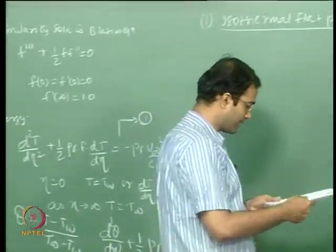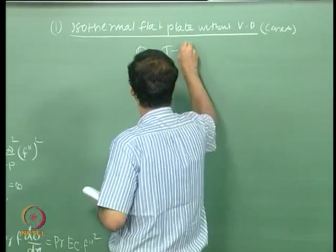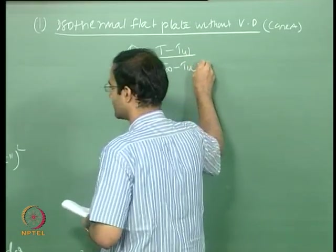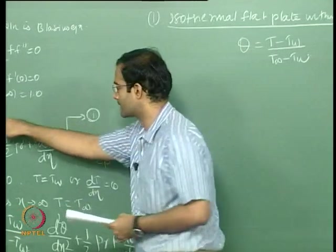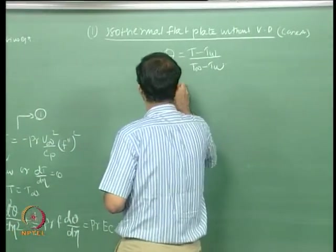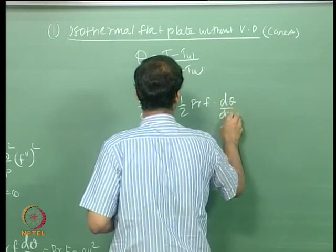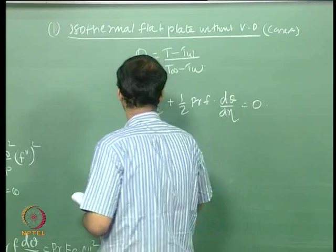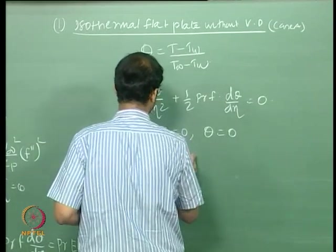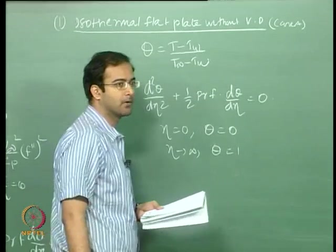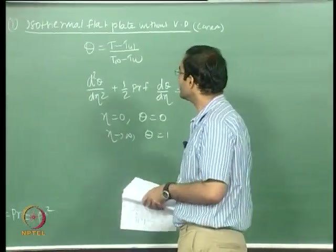The first sub-problem is an isothermal flat plate without viscous dissipation — that is Case A. This is nothing but the Polhausen's similarity solution. You define theta the same way as (T – T_wall)/(T_∞ – T_wall), substitute into the energy equation without the viscous dissipation, and get the Polhausen's equation: d²θ/dη² + (1/2) Pr f dθ/dη = 0, subject to θ(0) = 0 and θ(∞) = 1. This is a solution you have already done by shooting technique.